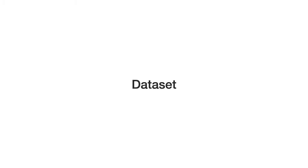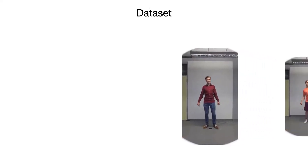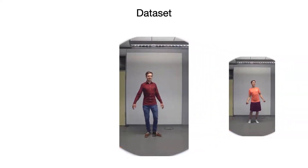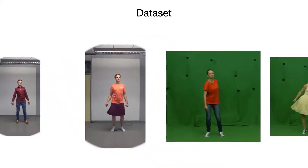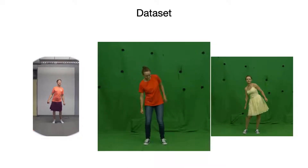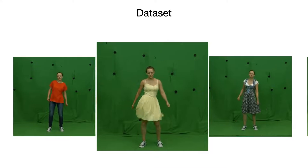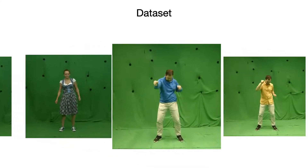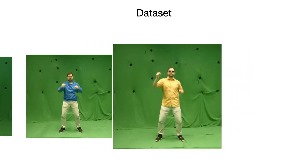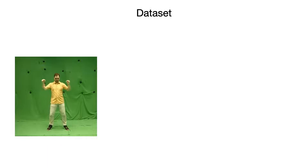For our experiments, we capture videos of up to 10 minutes showing target actors in a variety of clothings. Our dataset comprises simple jeans and shirts, a swinging skirt, a loose t-shirt, two dresses with complicated texture and wrinkle patterns, and a hoodie. Our sequences will be publicly available and can be downloaded from the project page.